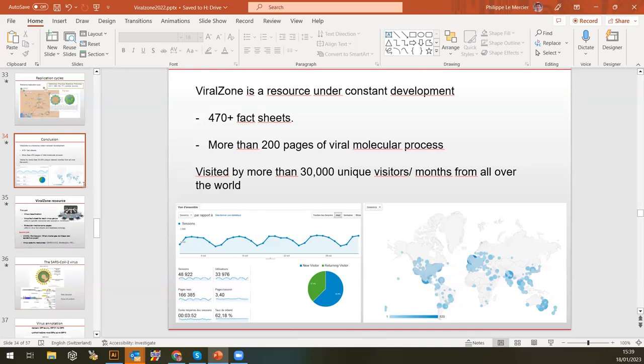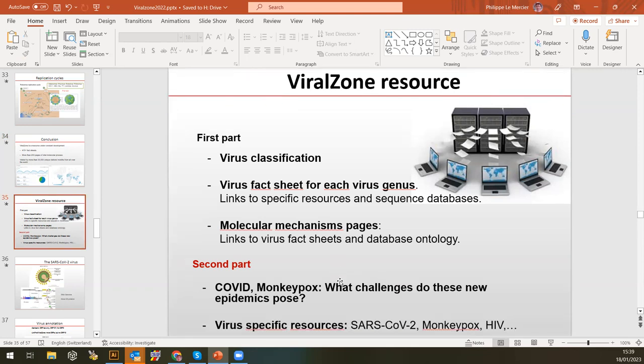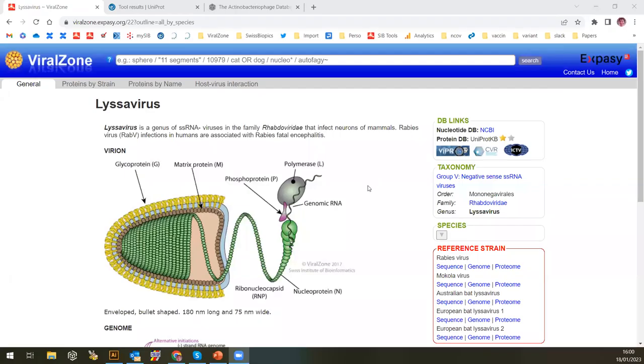Now we are going to make a pause for questions and discussions before getting to the second part, which will be more about the challenges of new epidemics and specific resources that have been created. To finish up with the fact sheet description, I wanted to show you also little tabs in each description of viruses. Here we are in Lyssavirus, which rabies virus belongs to. We have protein by strain, by name, and host-virus interaction. Let's see what it is.